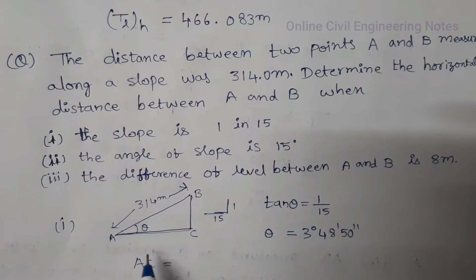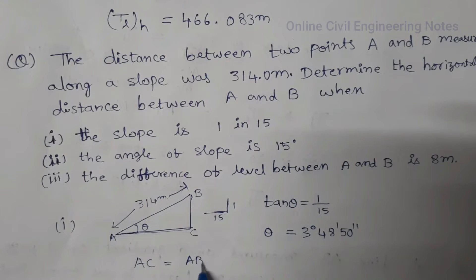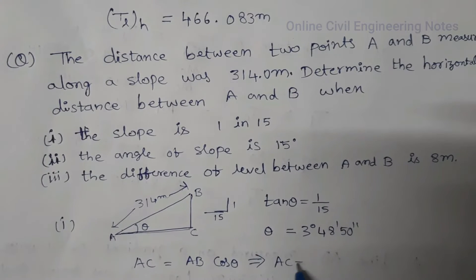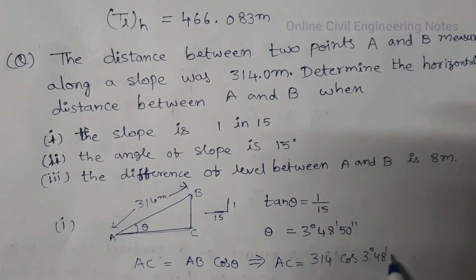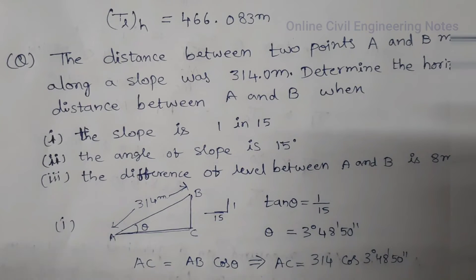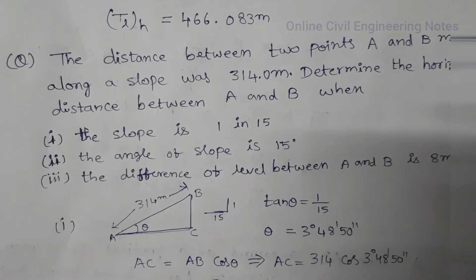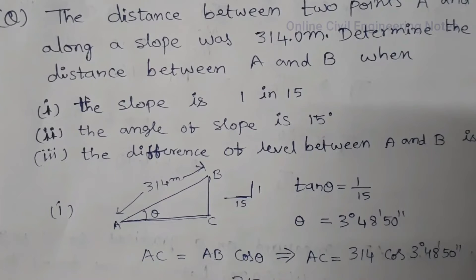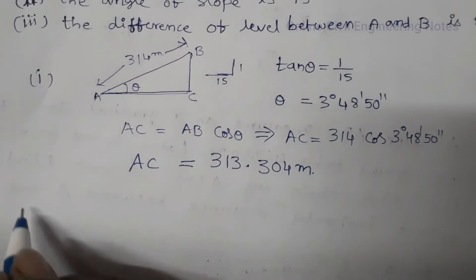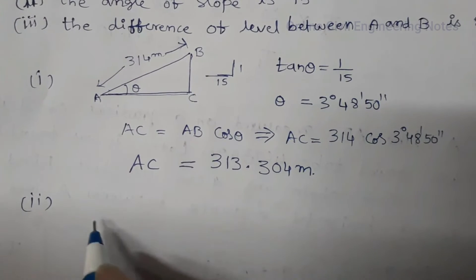The horizontal distance AC is equal to AB multiplied by cos theta. AB is 314 meters, cos theta at 3 degrees 48 minutes 50 seconds. Therefore, the horizontal distance between A and B, that is AC, is equal to 313.304 meters.